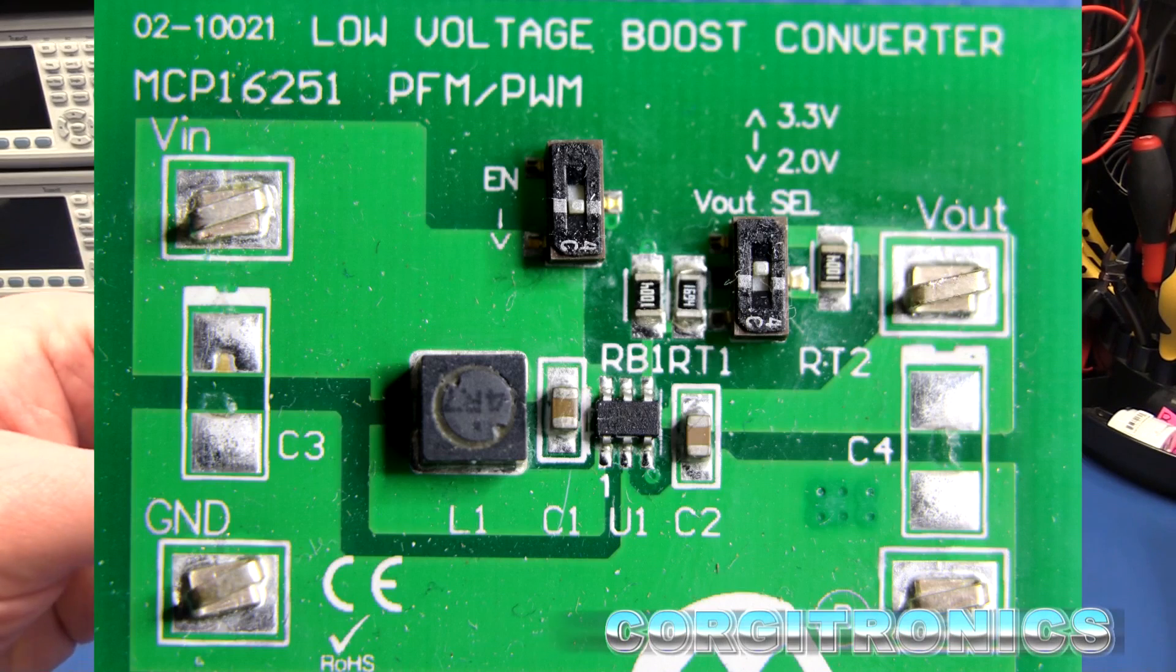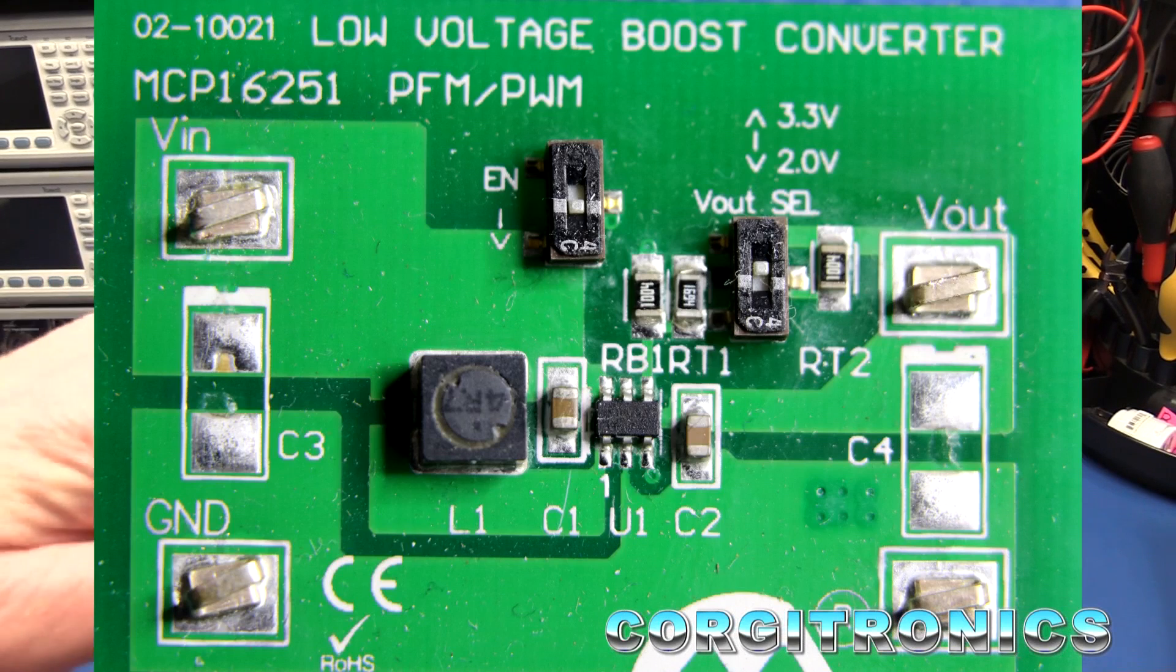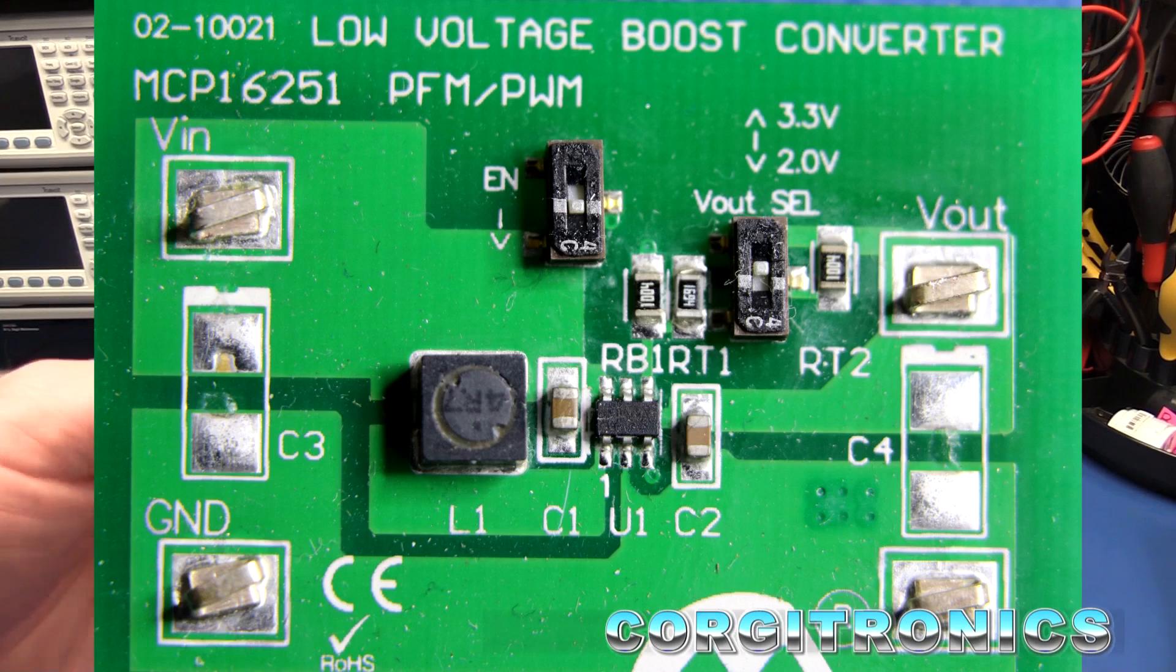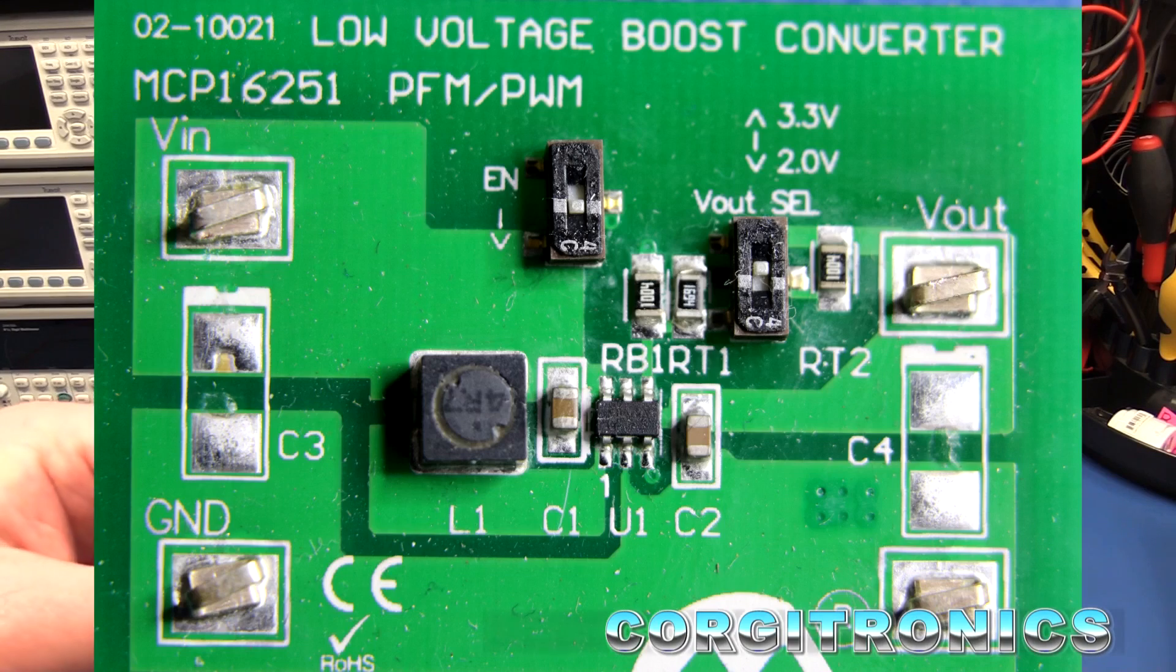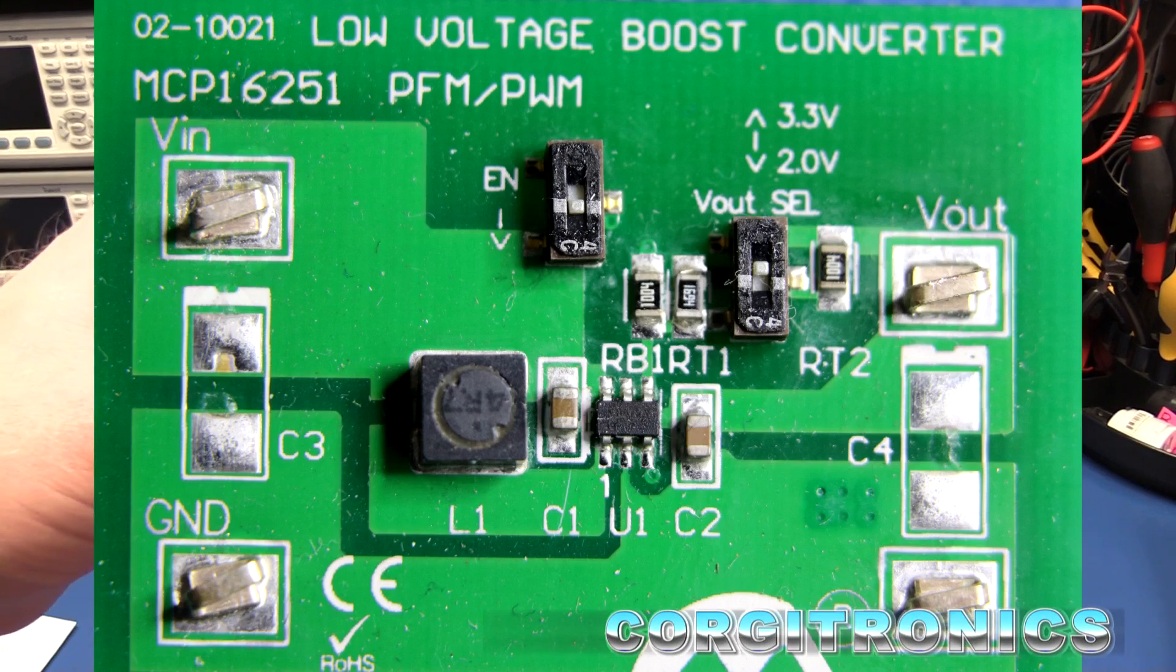A pretty neat little board here - easy clip-on test points for input and output, a couple of switches to throw it between pulse and other modes, and also a switch for the output. Do you want it boosting to 3.3 or just down to 2 volts output? So it's a pretty neat little thing.